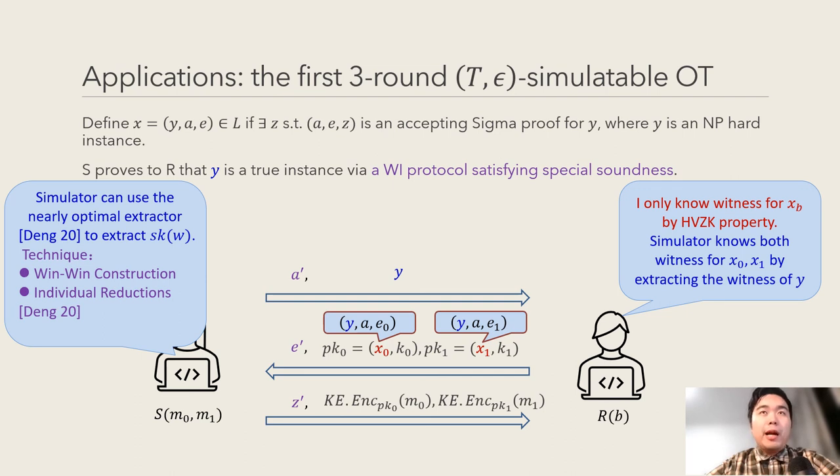These ciphertexts are generated by the sender by encrypting its two input strings. In the meanwhile, the simulator simulating receiver will extract both strings by generating two witness public keys and decrypting both ciphertexts. The simulator simulating sender will extract secret keys from malicious receiver using the individual reduction technique and the witness extractability property of our knowledge encryption. It's a win-win construction such that no matter how many secret keys are extracted, the simulator will always be able to conclude the simulation.